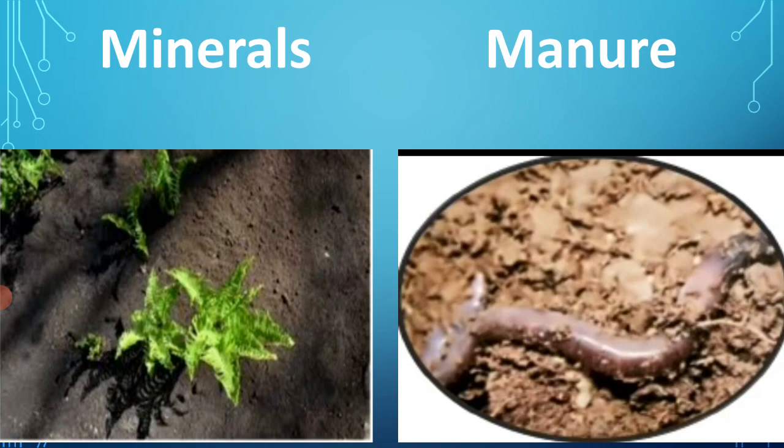Apart from air and water, soil contains minerals. Minerals are materials that make the soil fertile. Soil can be made rich by adding manure. Manure is the waste got from animals and plants that is mixed with the soil. It helps the plants to grow well.